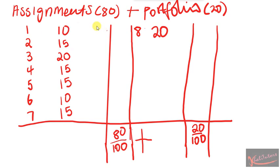Let's say in Assignment 1 you got 80 out of 100. What they're going to do is take that 80 for Assignment 1. This is your 80 over 100, which is basically 0.8 if you're good with maths. So instead of writing 80 over 100, I'm just going to write 0.8. If you got 80 out of 100 marks, we're just going to write 0.8 instead of writing that whole thing in.